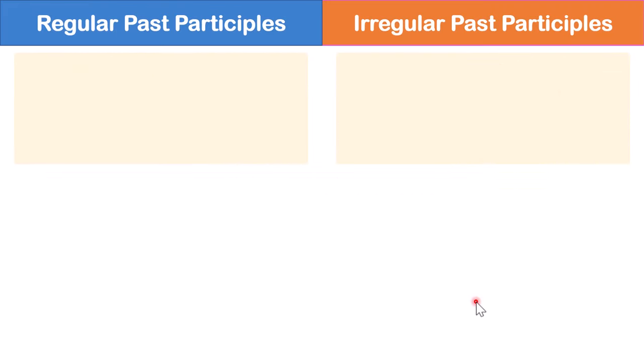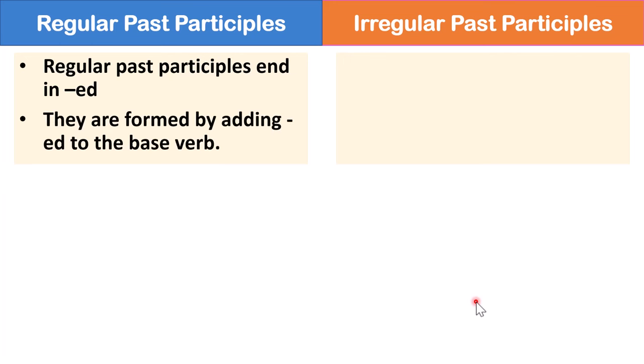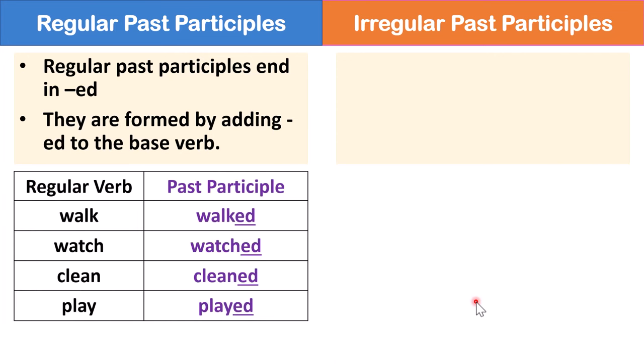Now let's talk about regular past participles and irregular past participles. Regular past participles end in ED. They are formed by adding ED to the base verb. For example, walk becomes walked. Watch becomes watched. Clean, cleaned. Play, played.